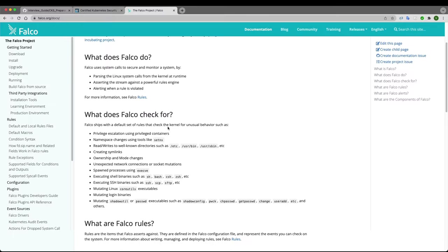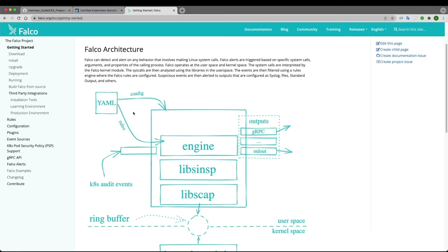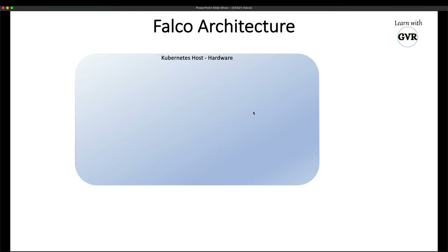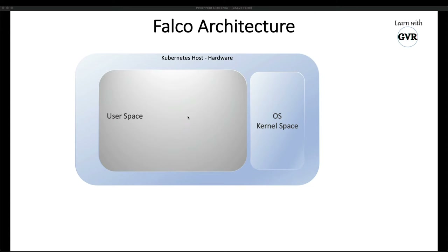Let's understand the Falco architecture. We have a Kubernetes cluster with kernel space and user space. In order to use Falco, first you need drivers — Falco requires drivers to interact with the kernel space. Then Falco has a Falco engine, and then Falco has configuration.